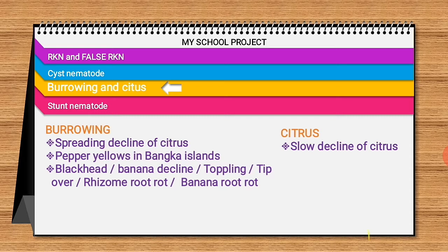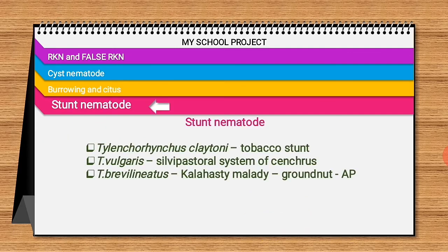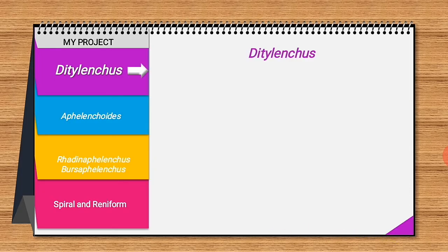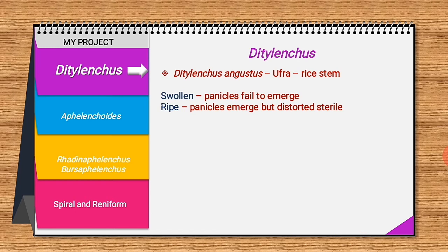Regarding stunt nematodes, Tylenchorhynchus clarus causes tobacco stunt — making the plant stunt with delay in flowering. Tylenchorhynchus vulgaris occurs in silvae pasture systems (silvae meaning forest pasture). Tylenchorhynchus brevilineatus is an important pest in groundnut and causes kalahasti malady in Andhra Pradesh. At advanced stages of kalahasti malady, the entire pod surface gets blackened and the roots also turn black.